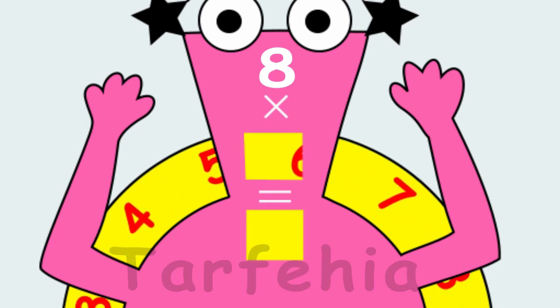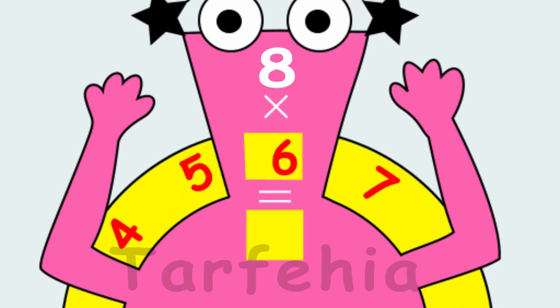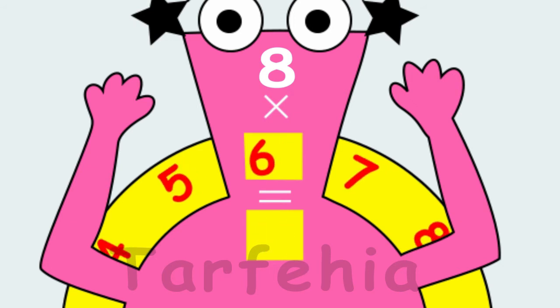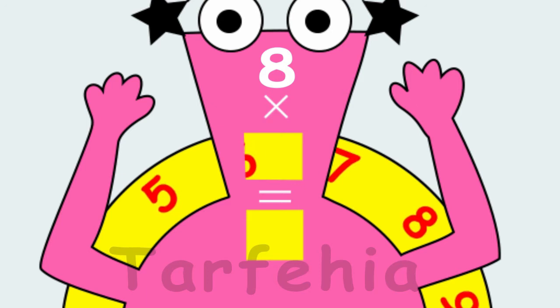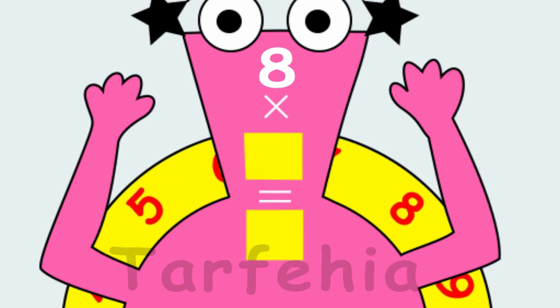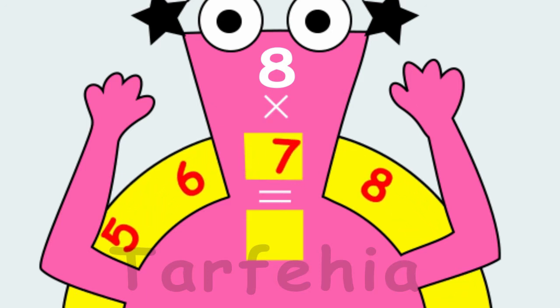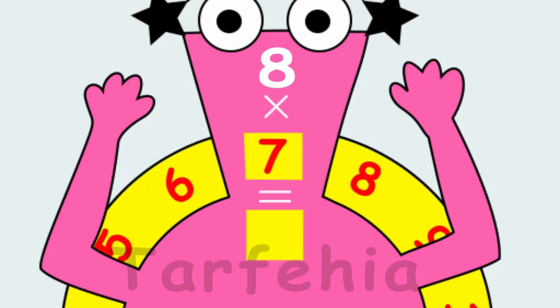8 times 6 equals 48. 8 times 7 equals 56.